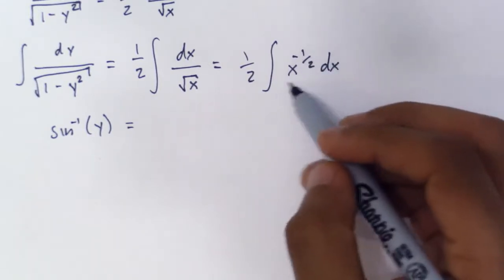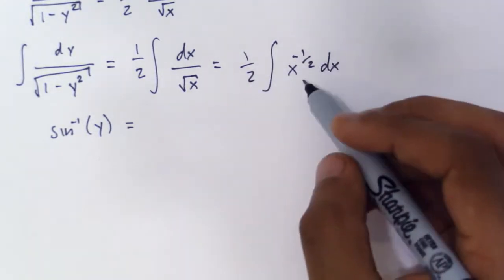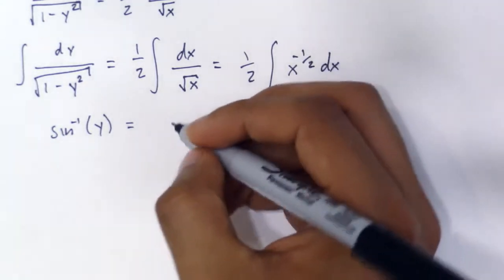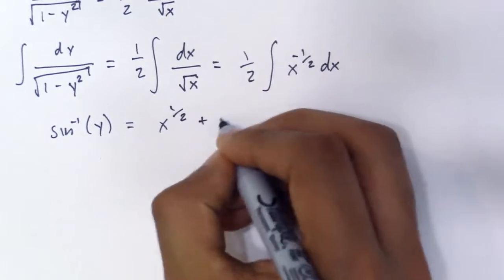Divided by the new exponent, that's just 1 half divided by 1 half, that's 1, so it's x to the 1 half plus c.